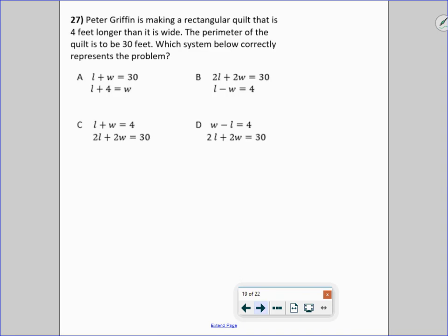Peter Griffin is making a rectangular quilt that is 4 feet longer than it is wide. The perimeter of the quilt is to be 30 feet, which system below correctly represents the problem. So the length, 2 times the length plus 2 times the width is the perimeter, so that's 30. So that one's out. So then, if it's 4 feet longer than it is wide, then the length minus the width has to be 4, so the correct answer is B.